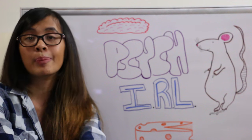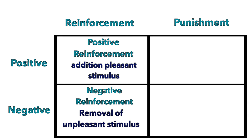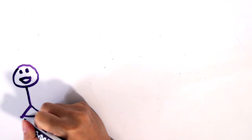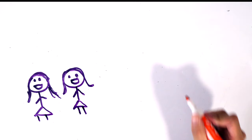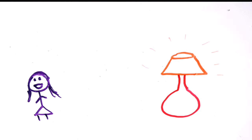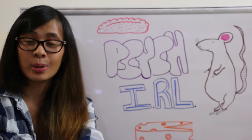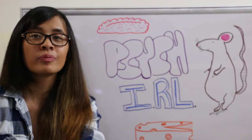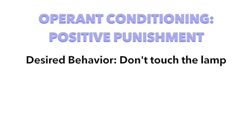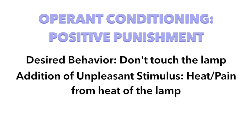Operant conditioning also includes punishment. Punishment is used to reduce a behavior. Punishment can be positive, and positive punishment is the addition of an unpleasant stimulus. I have these two younger cousins who are twins, and they were over for a birthday party. In my room I had a lamp that gets really hot — you touch it, you get burned. One of the twins came in my room and I told her not to touch that lamp. She touched it. Her sister came along and I told her the exact same thing. In the end, they both learned not to touch the lamp. The heat or pain from touching the lamp was the addition of an unpleasant stimulus.